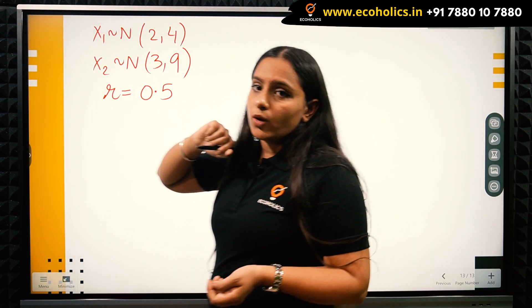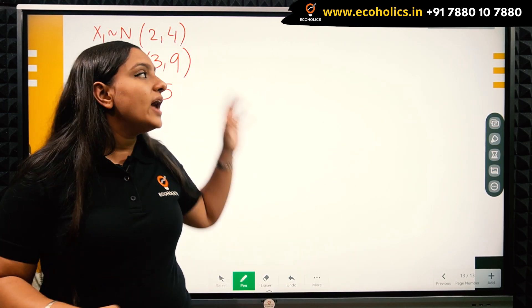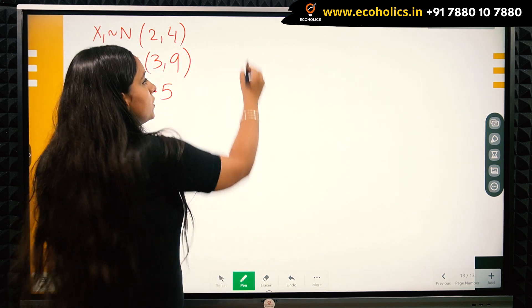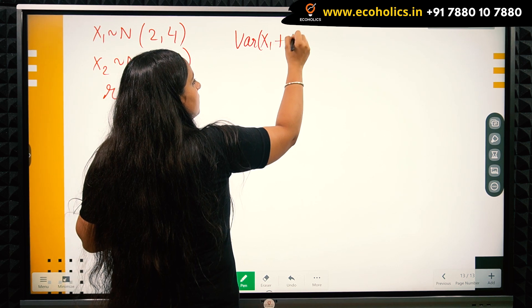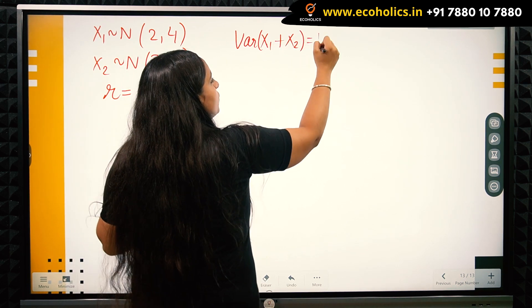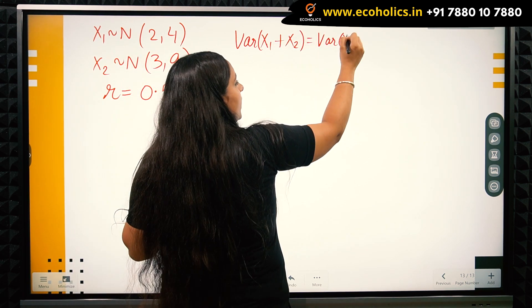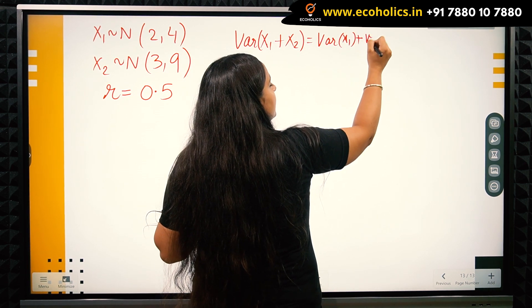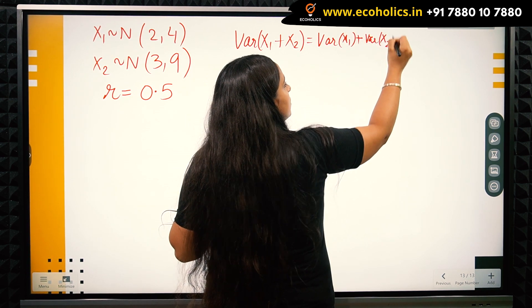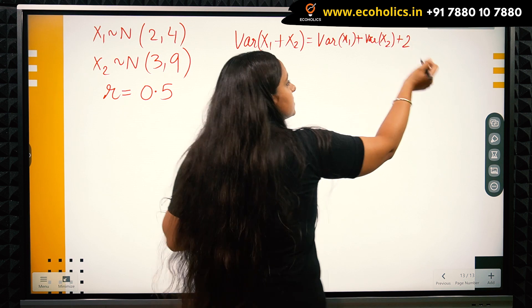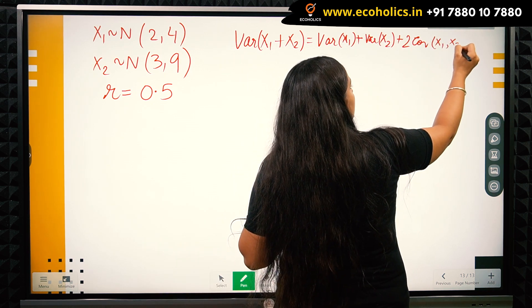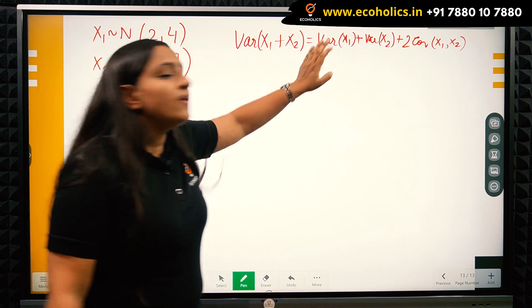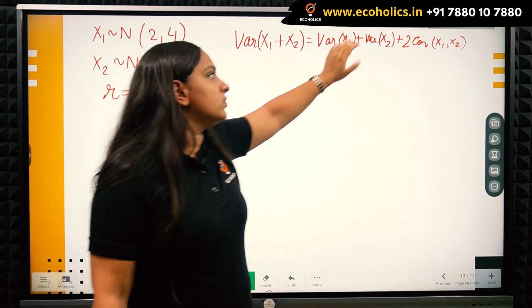We have to find the variance of X1 plus X2. The variance of X1 plus X2 equals variance of X1 plus variance of X2 plus twice the covariance of X1 and X2. We have the variance of X1 and variance of X2, but we don't have the covariance.